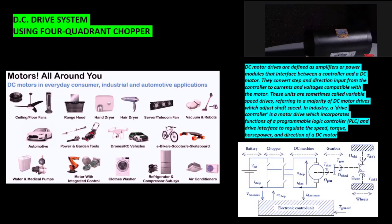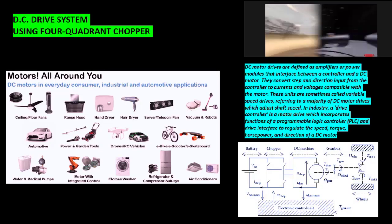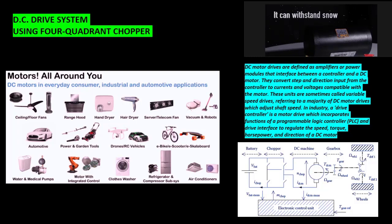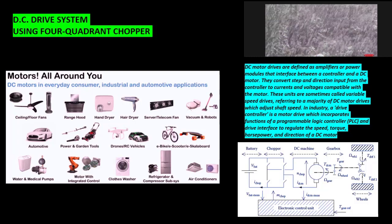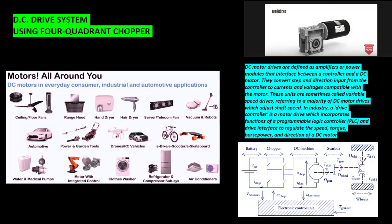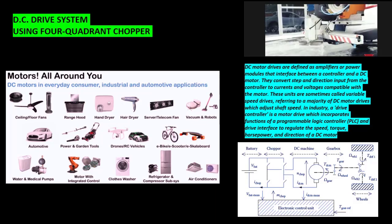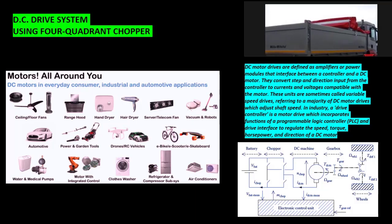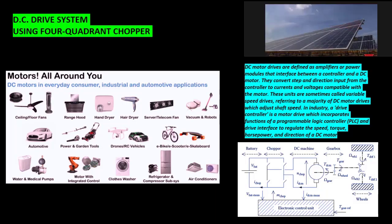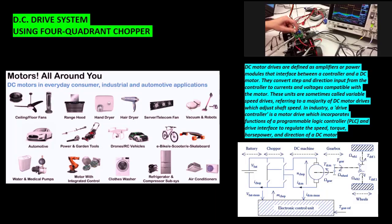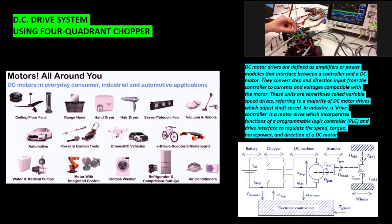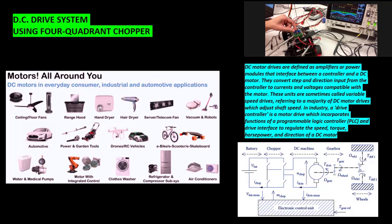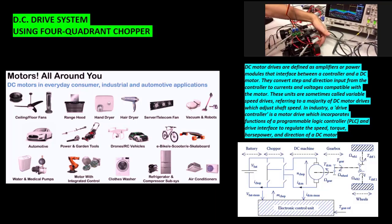DC motor drives are defined as amplifiers or power modules that interface between a controller and a DC motor. They convert step and direction input from the controller to currents and voltages compatible with the motor. These units are sometimes called variable speed drives. In industry, a drive controller is a motor drive which incorporates functions of a programmable logic controller and drive interface to regulate the speed, torque, horsepower, and direction of a DC motor.